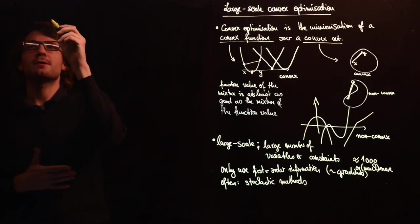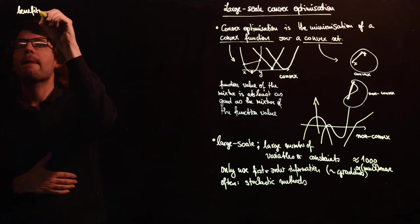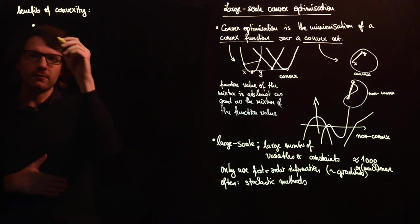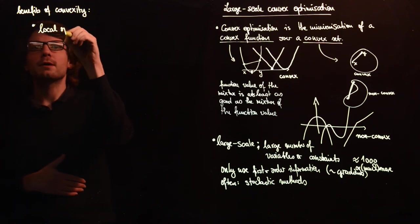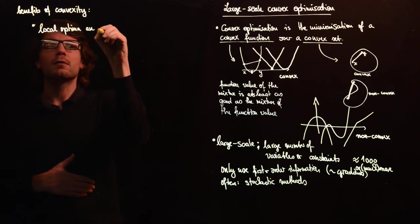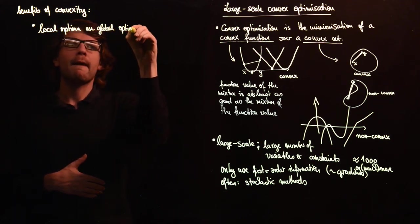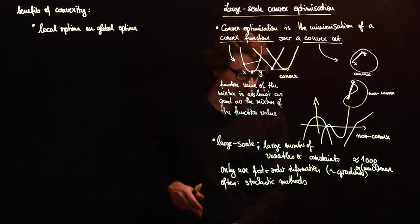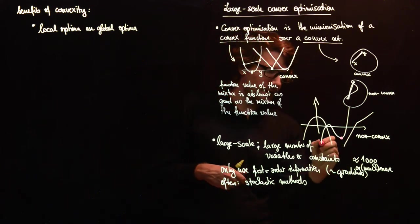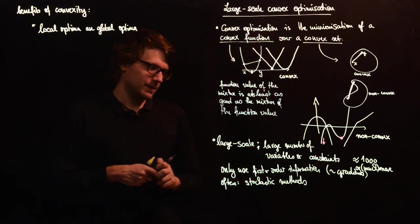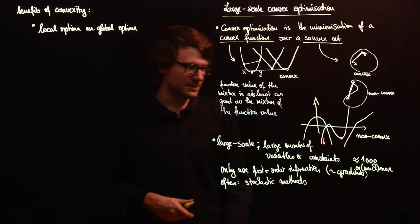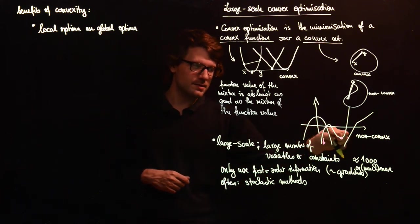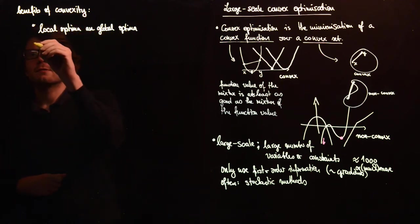What are the benefits of convexity? One very important point is that all local optima are global optima. This means you can't have something like this where you have some local optimum here, but the global optimum is at least smaller. There is a minimum which has a much lower function value than this local one. This is a very useful thing.